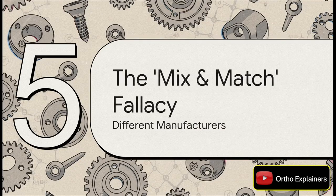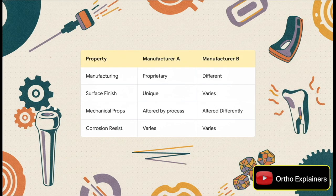This principle goes beyond just different metal types — it extends to mixing components from different manufacturers, even if they're specified as the same material, like 316L stainless steel. Same specification is not identical. Each manufacturer uses their own proprietary methods for milling, finishing, and heat treatment. These unique processes create subtle but significant differences in surface properties, microstructure, and ultimately corrosion resistance and mechanical strength.